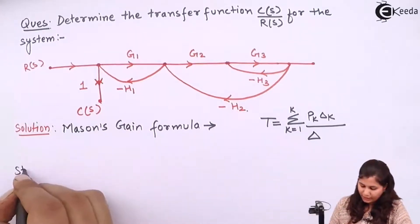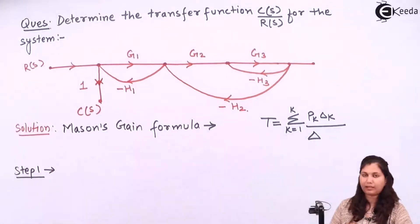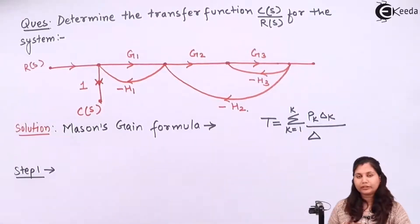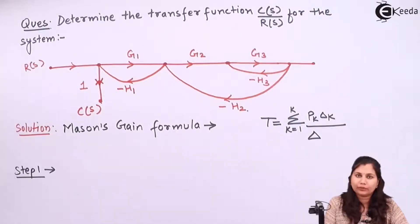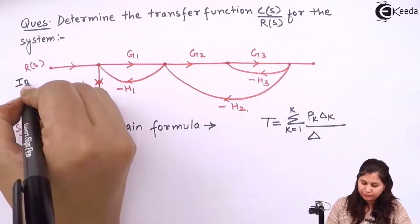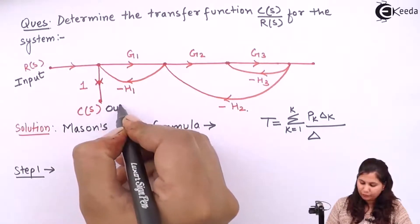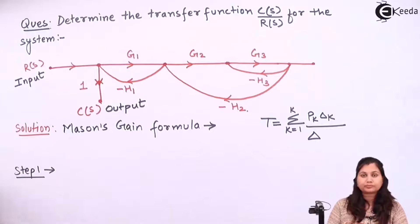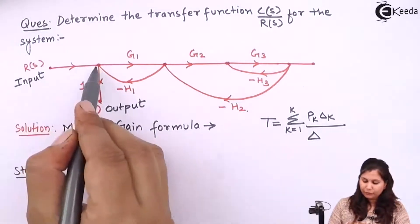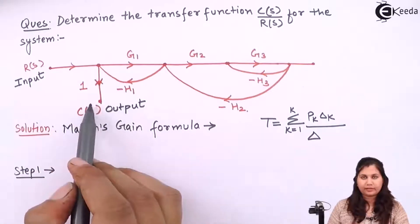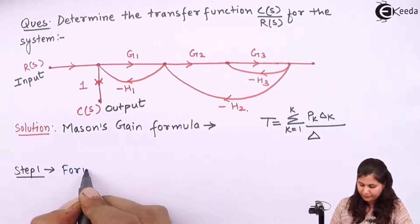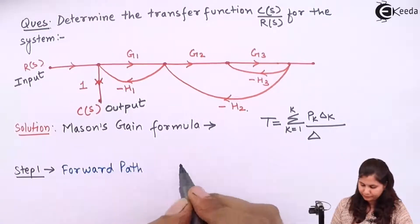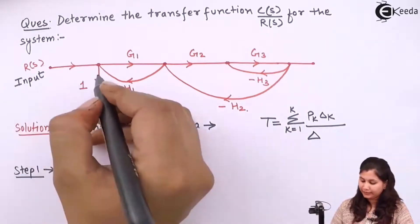So let's first find out — that is step 1 — we have to find out the forward path in this system. A forward path is a path which originates from the source node, that is the input node, and terminates at the output node or the sink node. Here we have R(s) as the input node and C(s) as the output node. The path from the input node to the output node is only this one, there is no other path, and the gain of this path is P1 = 1.